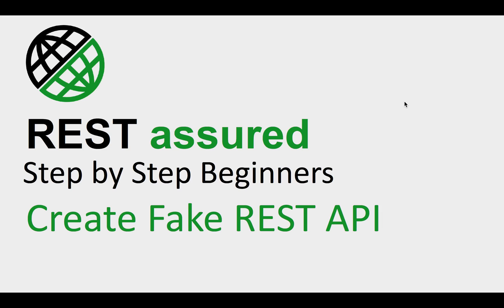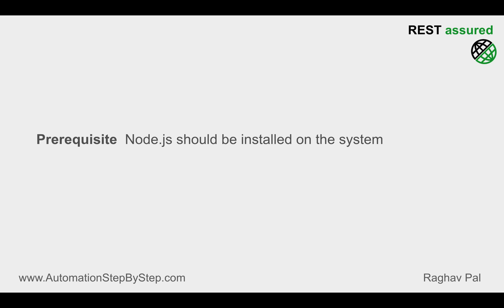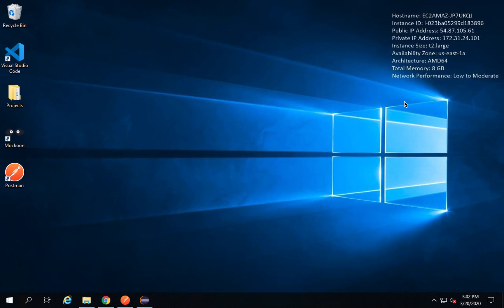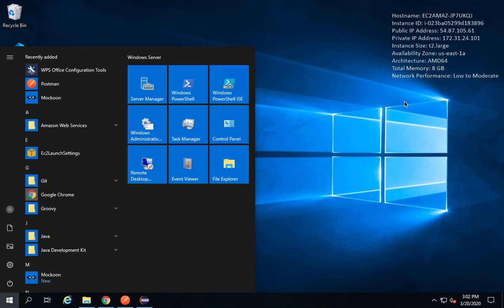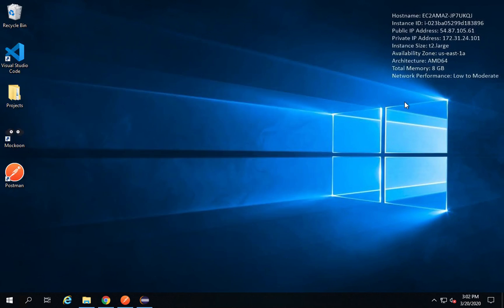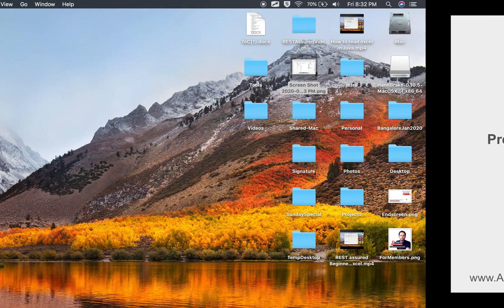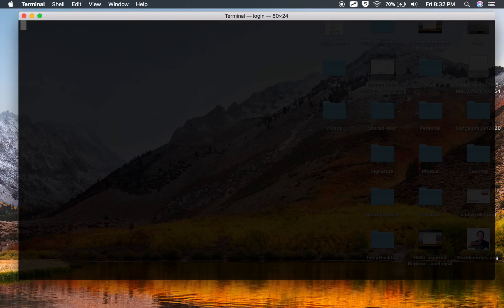Hello and welcome, I am Raghav and in this session we are going to see how we can create fake REST APIs for testing. This is going to be very easy and very interesting. A prerequisite for this session is we should have node.js installed on our system, because the software we are going to use is a node.js program. In case you want to check if node.js is installed, you can go to your command line, or if you are on Mac you can go to your terminal.